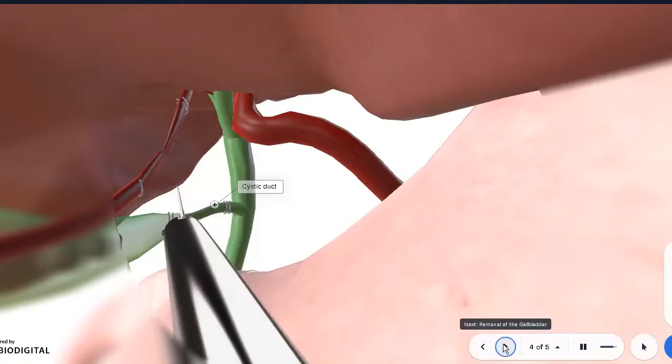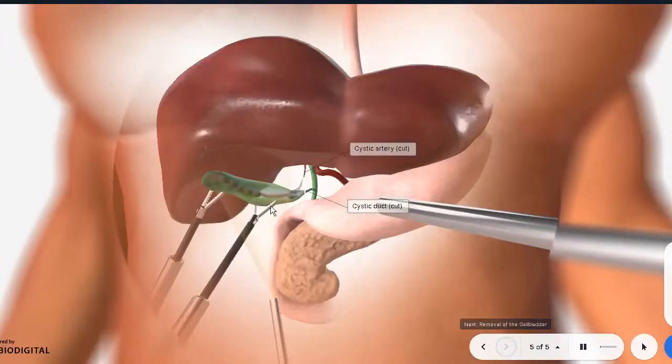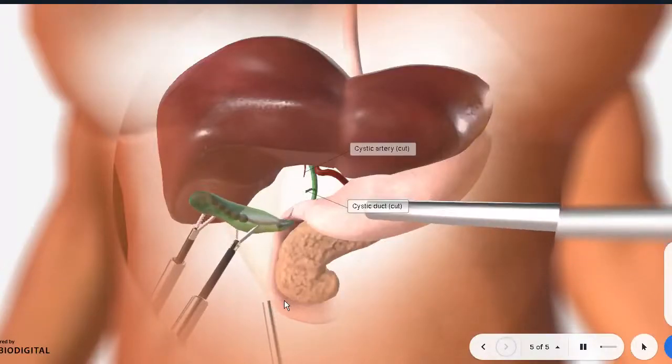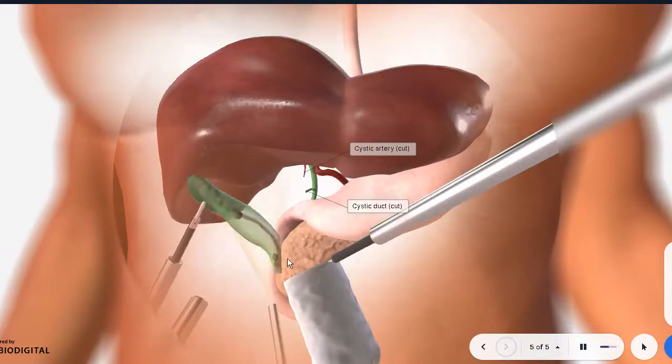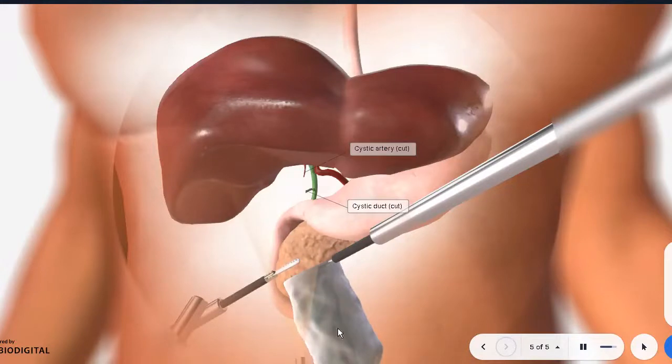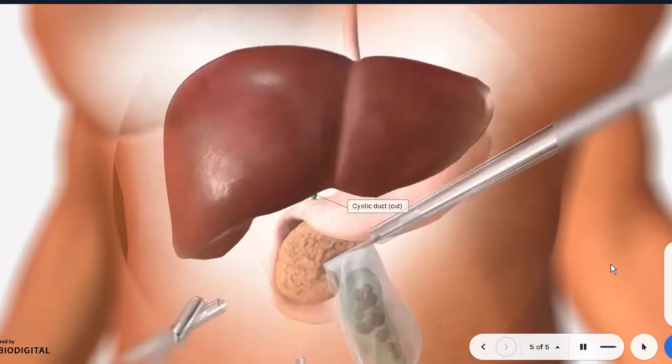And once the gallbladder is removed, it is passed through the ports actually. Because it's quite a soft structure, unless it was actually quite massive and multiple gallstones were present. But it's placed, sometimes it's placed in a bag and it's passed through the ports. And that was basically your cholecystectomy. A really straightforward procedure, very short.